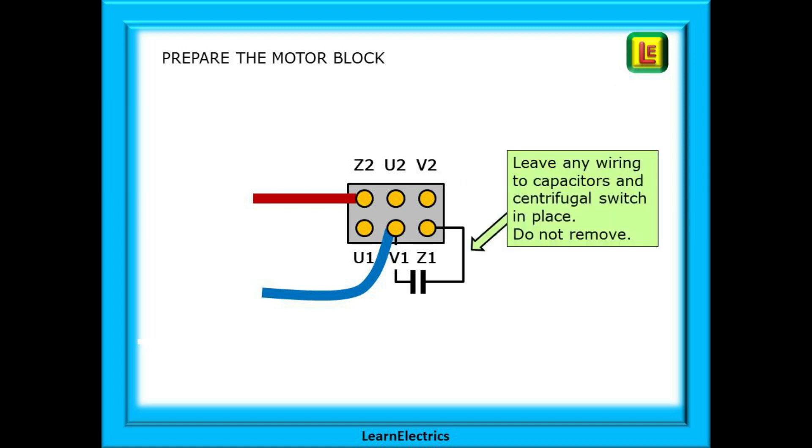There will be some extra wires on the motor block that go to the run and start capacitors and to the centrifugal switch on the rotor shaft. Leave these in the same positions. Do not remove them.